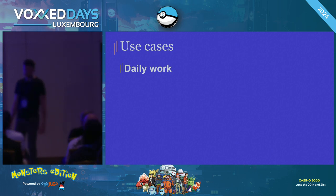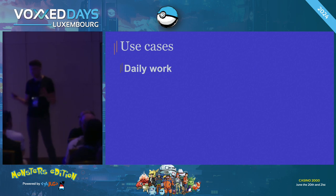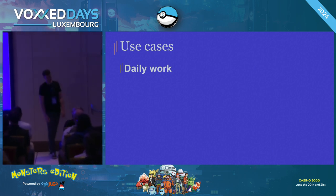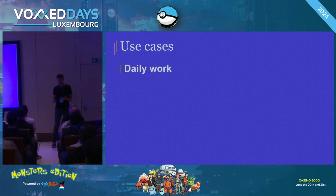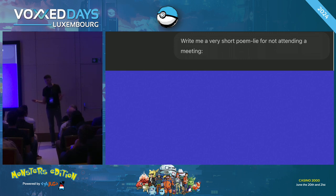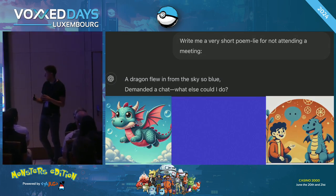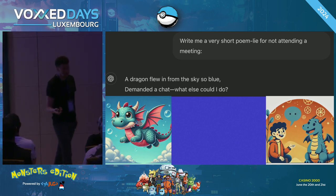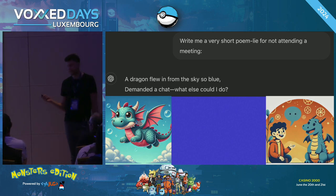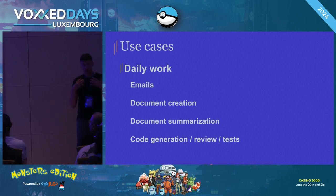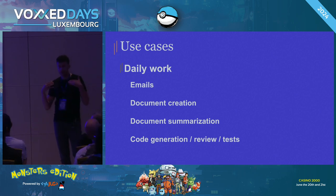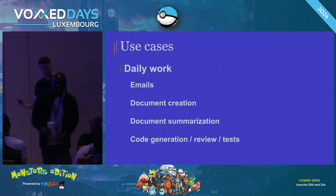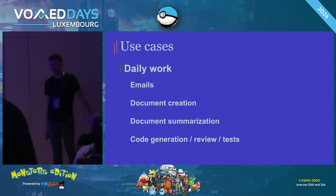Let's get started with the use cases for large language models. I believe you're familiar with those daily work use cases. For example, you missed a very important meeting — you can ask ChatGPT to come up with an excuse. It can even be an excuse in the form of a poem. You can use it to do email generation, document creation, summarizing documents, generating code, doing code reviews, writing tests.